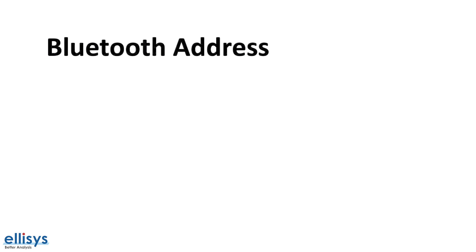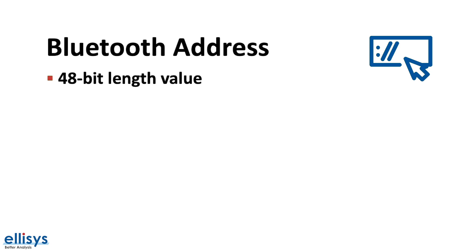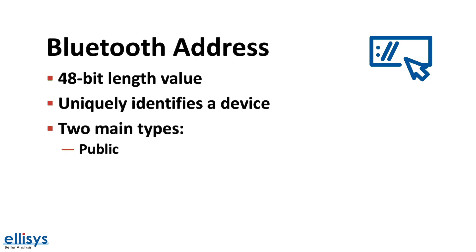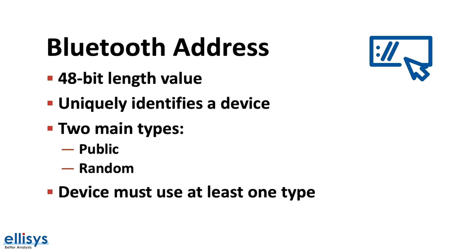So what is a Bluetooth address? A Bluetooth address, sometimes referred to as a MAC address, is a 48-bit value that uniquely identifies a Bluetooth device. There are two main types of Bluetooth addresses: public and random addresses. A device must use at least one of these addresses and in some cases it may contain both.